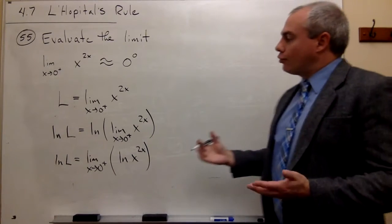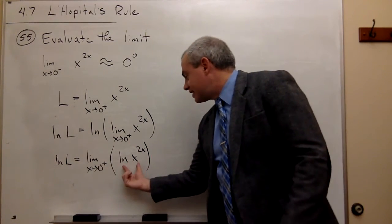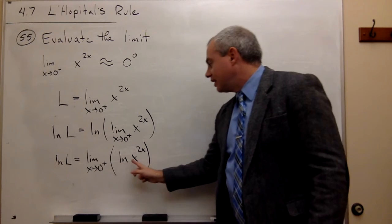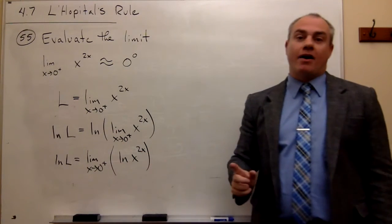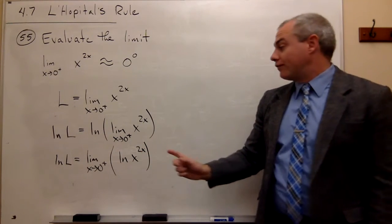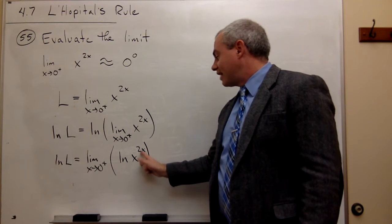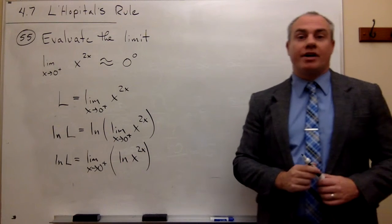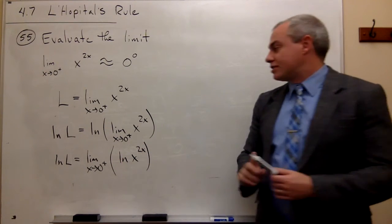The whole reason I used ln in the first place is so that I get something like this. I've got ln of x raised to the 2x power, but by the power rule for natural logs, I can move that 2x out in front of the natural log. So let's do that.